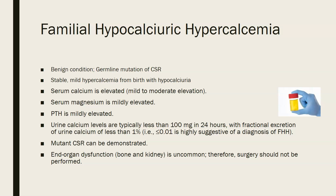You can also see elevated serum alkaline phosphatase in severe disease. Another condition is familial hypocalciuric hypercalcemia, a benign condition caused by a germline mutation of the calcium sensing receptor. As the name suggests, it is inherited (familial), and you'll have low calcium in the urine (hypocalciuric) but high calcium in the blood. There is a stable mild hypercalcemia from birth. Serum magnesium is mildly elevated, parathyroid hormone can be mildly elevated, and urine calcium levels are typically less than 100 milligrams in 24 hours with a fractional excretion of urine calcium less than 1%. The mutant calcium sensing receptor gene can be demonstrated.